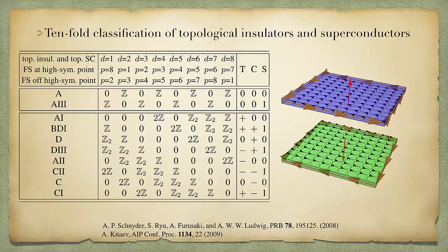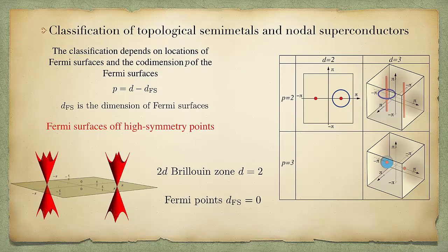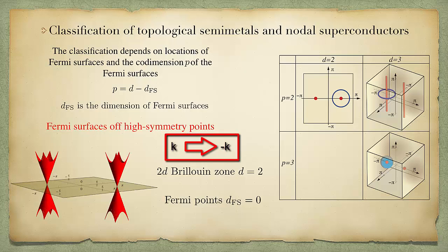This is the tenfold classification table. The first column presents the classification of topological insulators and topological superconductors. D is the spatial dimension. Let us discuss the classification of topological semi-metals and nodal superconductors. The classification depends on the location of the Fermi surface and the codimension p of the Fermi surface. Let us subtract the Fermi surface dimension d_fs from the spatial dimension d. First we consider Fermi surfaces at high symmetry points. Particle-hole symmetry and time-reversal symmetry operations switch k to minus k, and symmetry points are invariant under these operations, such as the (0,0) point and (π,π) point.